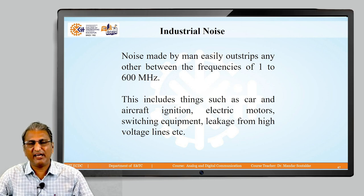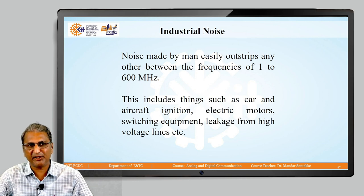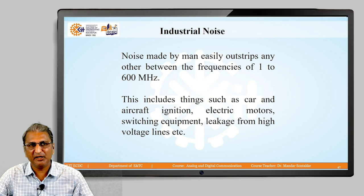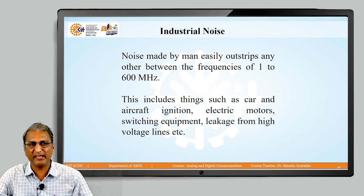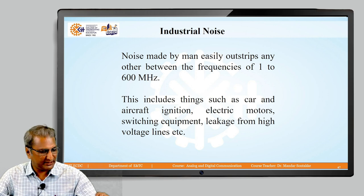Industrial noise — the noise made by man easily outstrips any other between the frequencies of 1 to 600 megahertz. This includes car and aircraft ignition, electric motors, switching equipment, and leakage from high voltage lines.